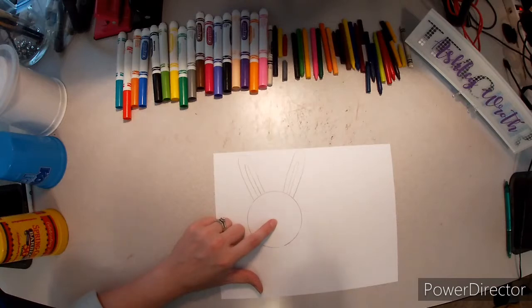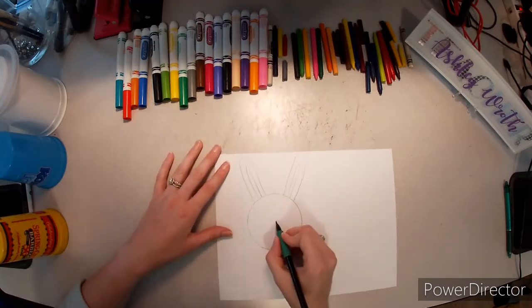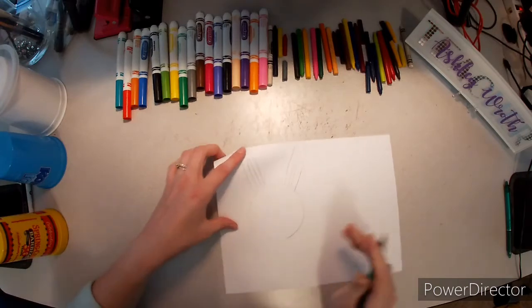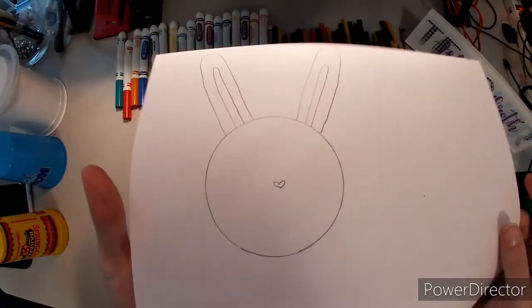Now, right in the smack dab middle of our rabbit's face, we are going to do a teensy tiny little nose. Because rabbits have little bitty noses. And our little nose is a heart shape.